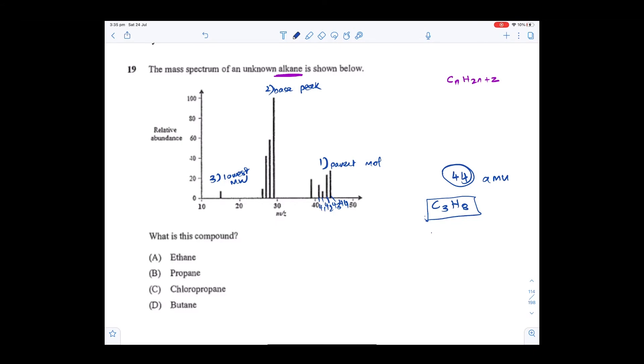Can't be butane because butane's got four carbons - four times 12 is 48, it's already over 44. So it can't be butane. Chloropropane - chlorine is 35 protons, it's huge. Chloropropane would make the molecular weight like 70.